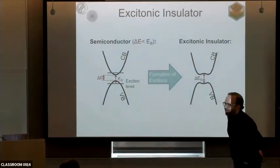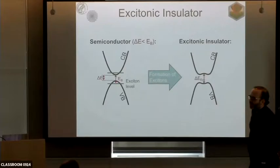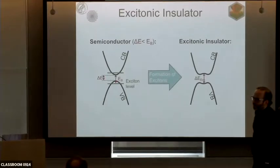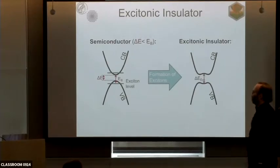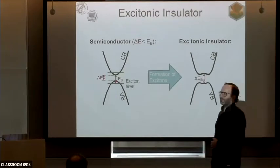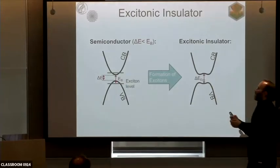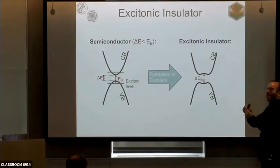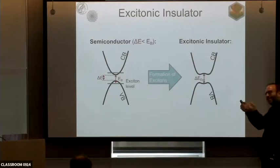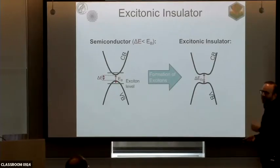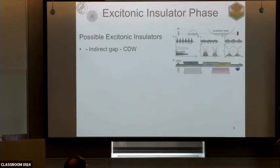As experimentalists, what physical mechanism could allow a direct band-gap semiconductor to have an exciton binding energy larger than the gap? Most textbook single-pole approximations tell you the binding energy is smaller than the gap. One possibility is to play with the screening, or to have charge-transfer-type excitons where you separate the charges, which can give pretty high binding energies depending on the screening.